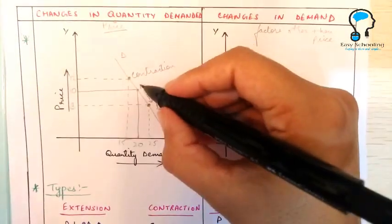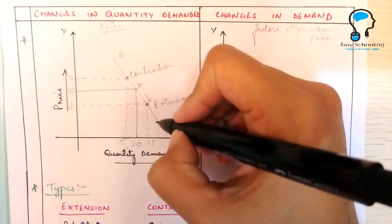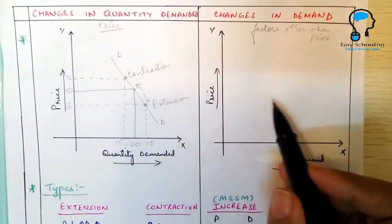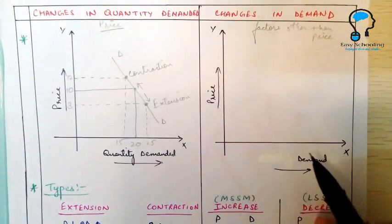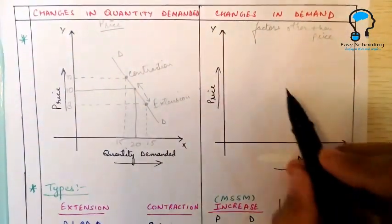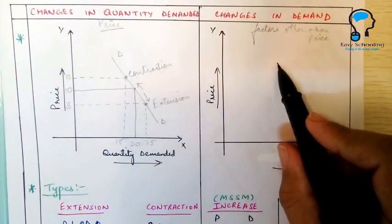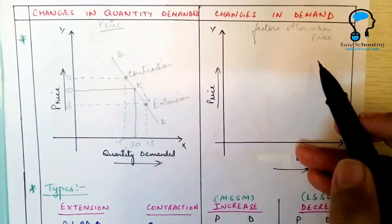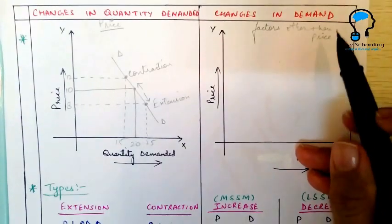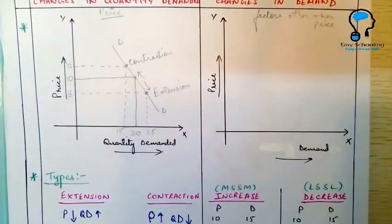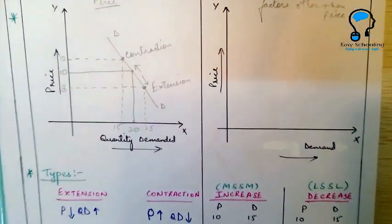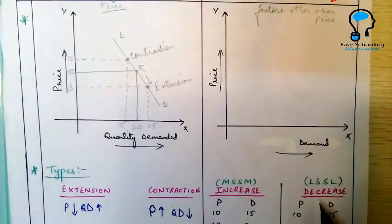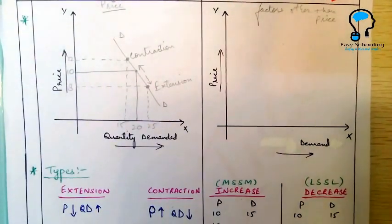Now let us see what happens in the case of changes in demand. Here price will not change, but some other factors will bring a change in demand. This change in demand is also of two types: increase in demand and decrease in demand.